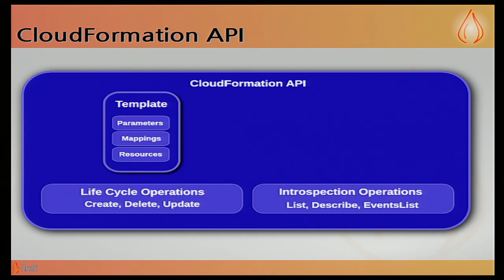We have the CloudFormations templates API. There are some lifecycle operations — create, delete, and update — and some introspection. You can list the stacks that you have created. The describe operation brings out all the state information of the stack, like current running states of all the resources. Events are generally in the order of a resource being initialized, then moving to a running state or a failed state.